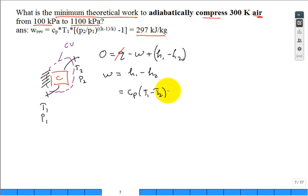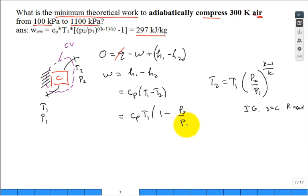How do we find T2? From second law analysis, we found that T2 = T1(P2/P1)^((K-1)/K). Where did that come from? Ideal gas undergoing an isentropic, S equal to constant, compression process with constant specific heats, C is constant. We can substitute that in and you get C_P*T1*[1-(P2/P1)^((K-1)/K)]. The units and magnitude are 297 kilojoules per kilogram.